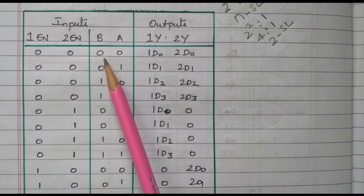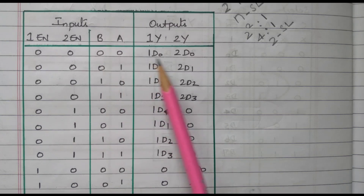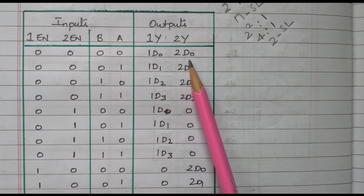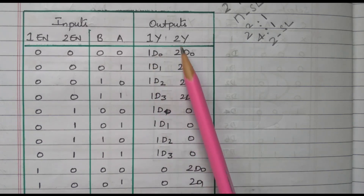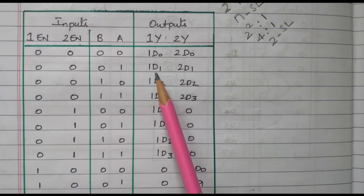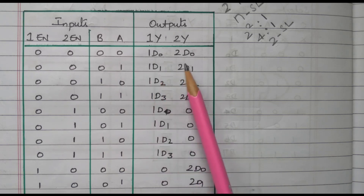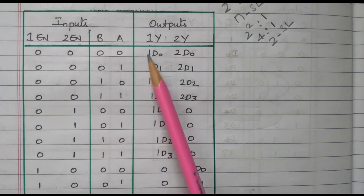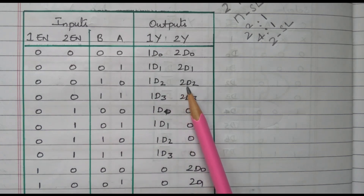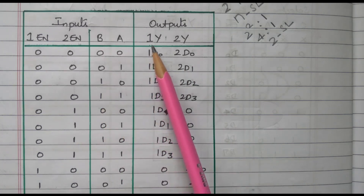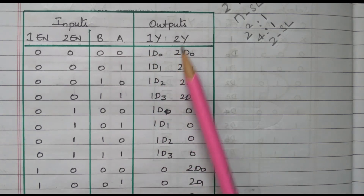When both enables are 0, both multiplexers are activated. With selection 00, 1D0 is available at the first output and 2D0 at the second output. With 01, 1D1 and 2D1 are available. With 10, 1D2 is available at multiplexer-1 output and 2D2 at multiplexer-2 output. With 11, 1D3 is available at the first output and 2D3 at the second output.